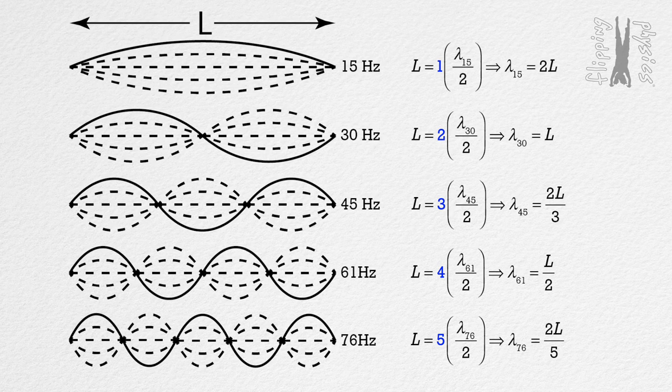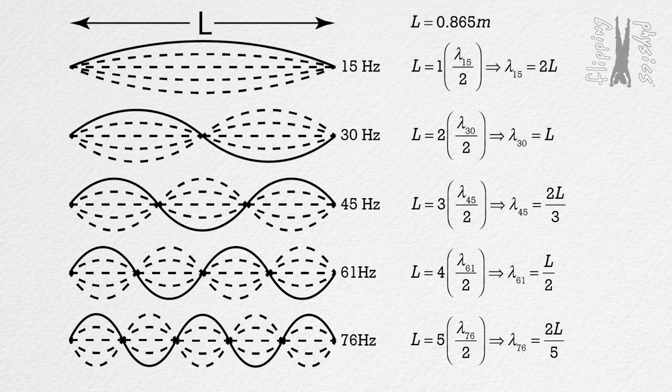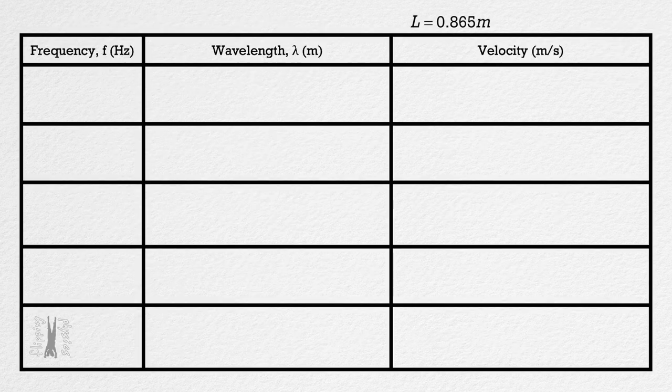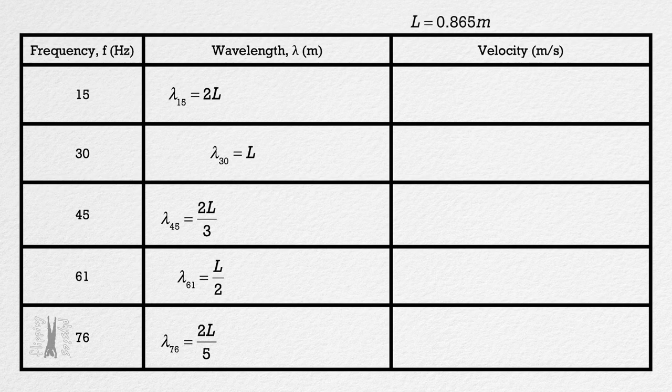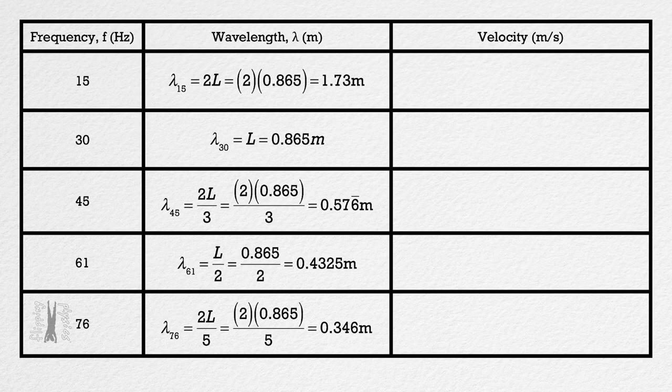Now we are going to add some numbers to this and actually solve for the average speed of the wave on the string in these standing wave patterns. I measured the length of the string, capital L, to be 0.865 meters. That means we can create a table and add all of our frequencies and corresponding wavelengths to it. We actually determined the equations for the wavelengths and the calculations are relatively straightforward so I'm not going to walk through each of those.